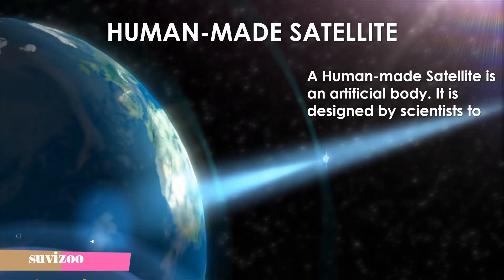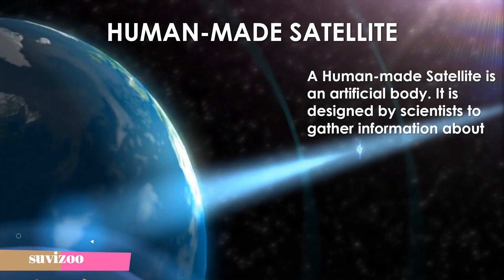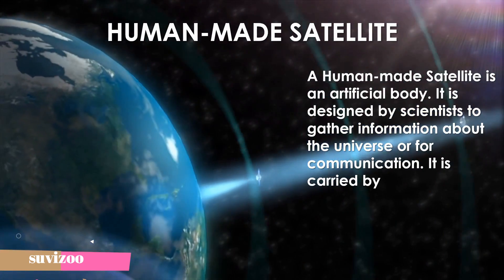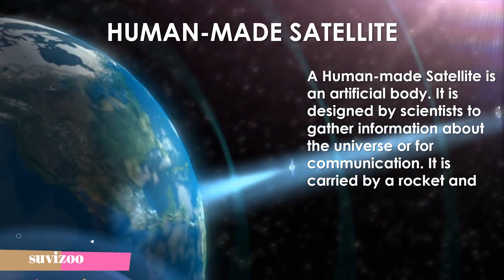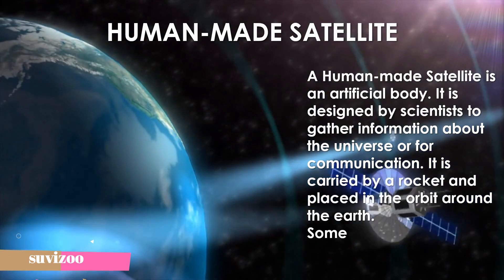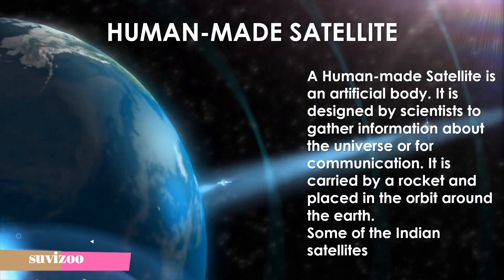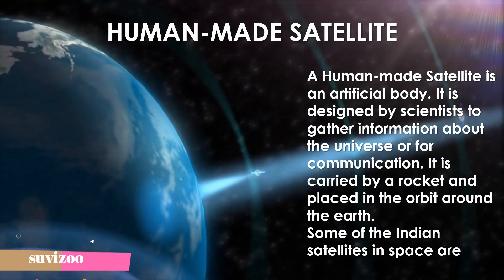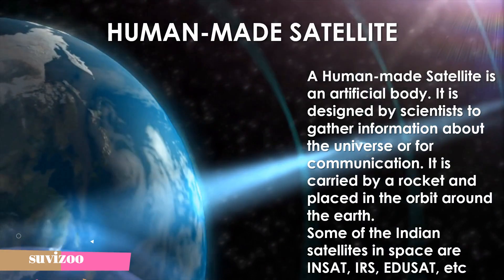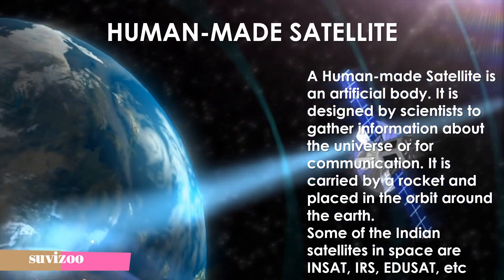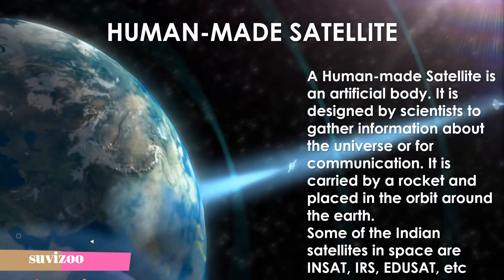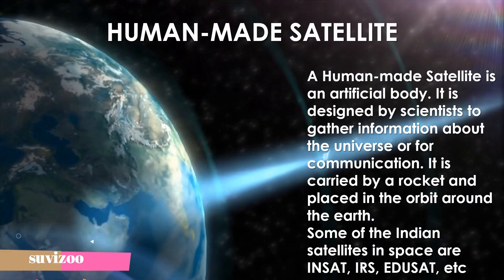An artificial satellite is designed by scientists to gather information about the universe or for communication. It is carried by a rocket and placed in orbit around the Earth. Some of the Indian satellites in space are INSAT, IRS, EDUSAT, etc.